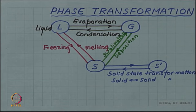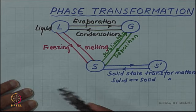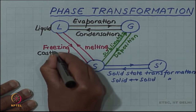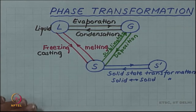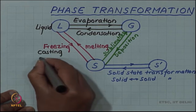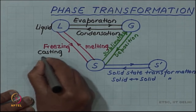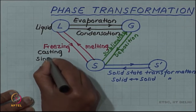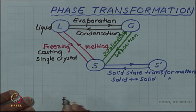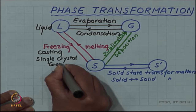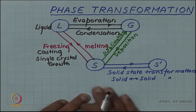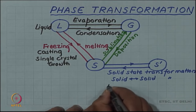Some of these transformations are technologically very important. For example, freezing is used in casting, which is a very important engineering process for fabricating many components. In the modern semiconductor industry there is single crystal growth. And solid-solid transformation is used very much in a process called heat treatment.